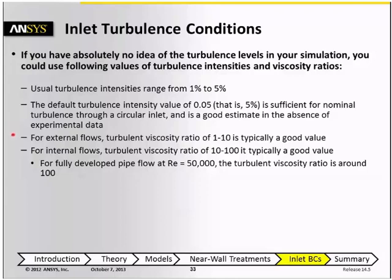For external flows, it's common to use a turbulent viscosity ratio of 1 to 10. For internal flows, the turbulent viscosity ratio is commonly in a range of 10 to 100. As an example, you can calculate a fully developed pipe flow at a Reynolds number of 50,000, and you can see that the bulk turbulent viscosity ratio is around 100.